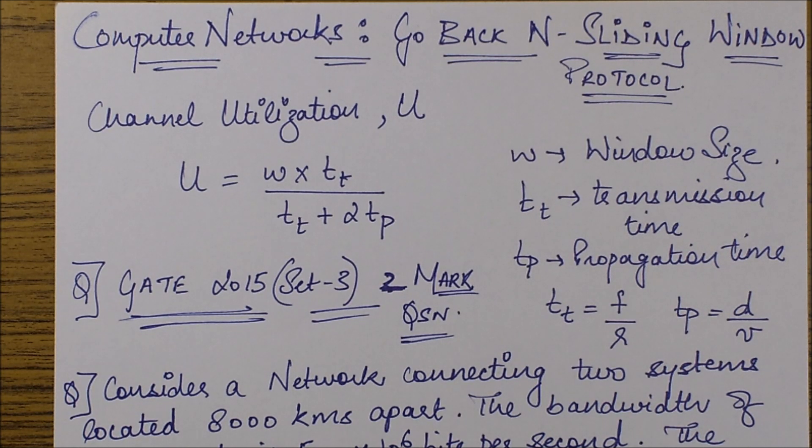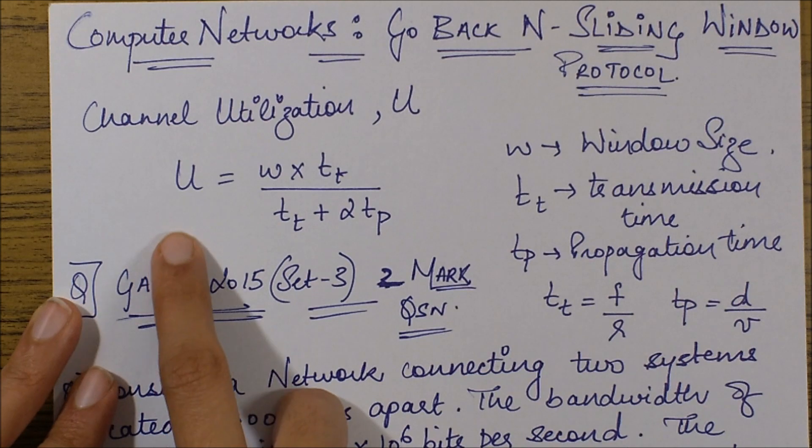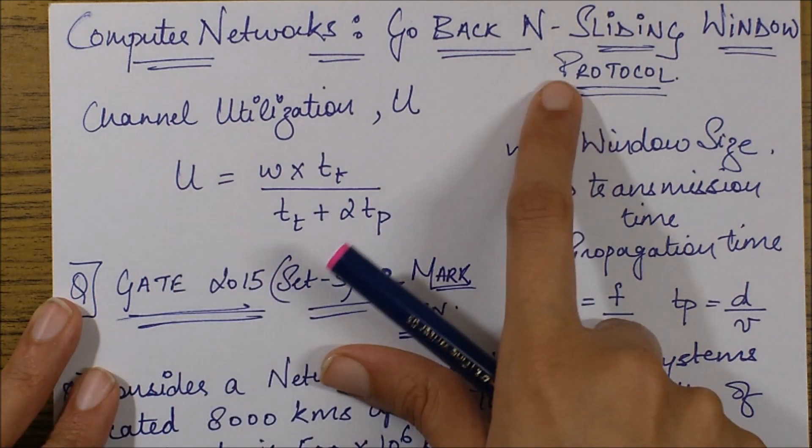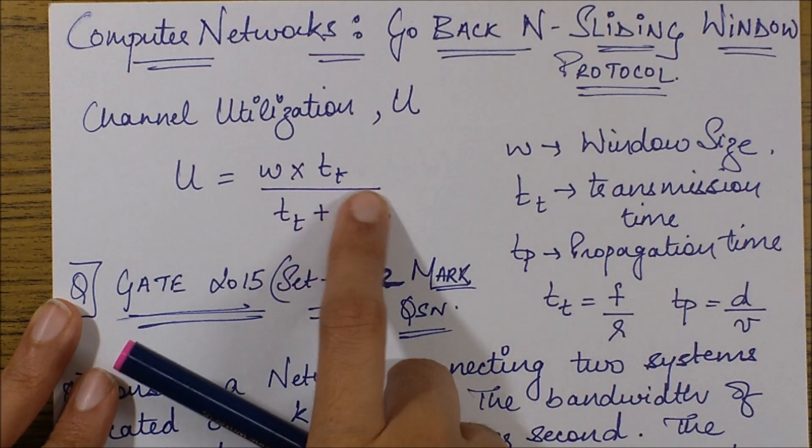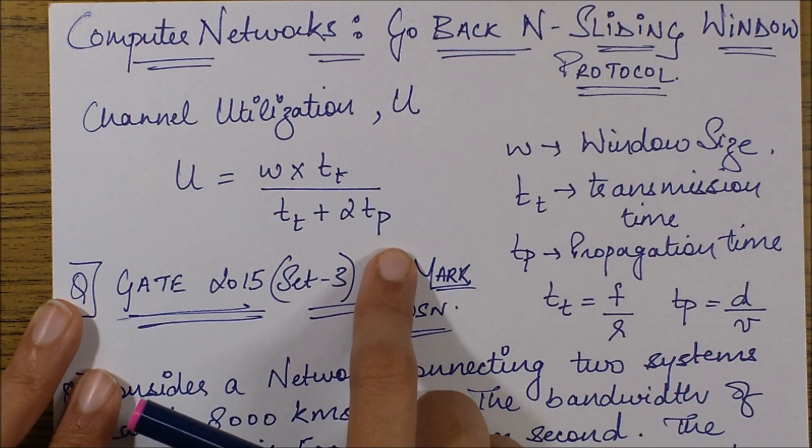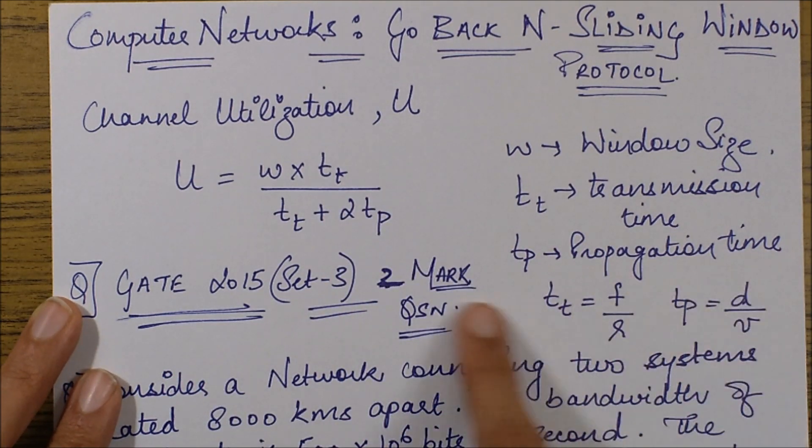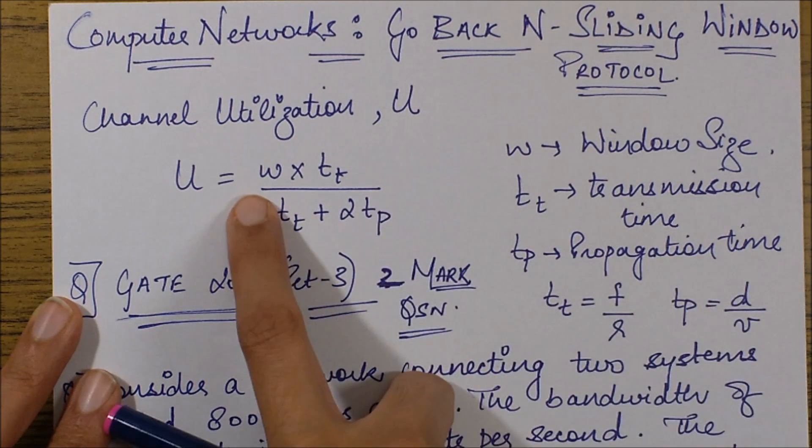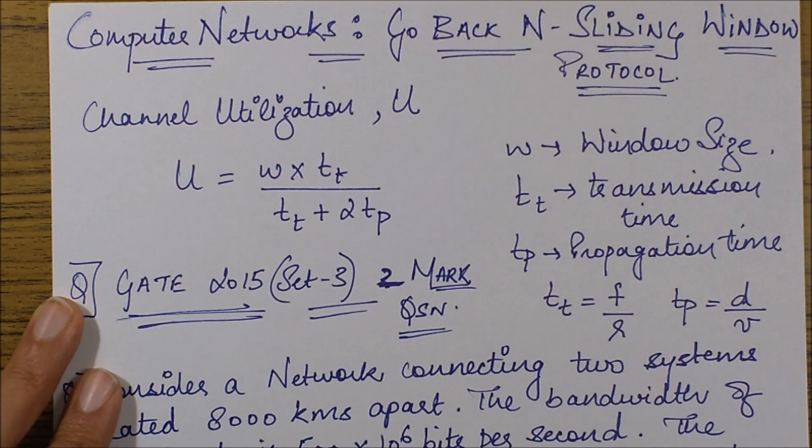In this session, since I'm going to deal with channel utilization questions, I have already written the basic formula for channel utilization for Go-Back-N sliding window protocol, which is U = (W × tt) / (tt + 2tp). Here, tt is the transmission time, tp is the propagation time, and W is the window size of the sliding window.